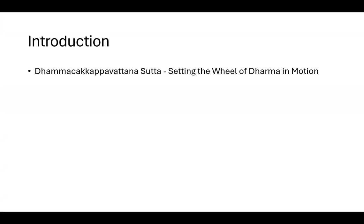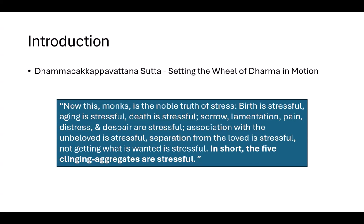Immediately after this, he explains the Four Noble Truths. The Buddha says: 'Now monks, this is the Noble Truth of stress, or dukkha, of dissatisfaction. Birth is stressful. Aging is stressful. Death is stressful. Sorrow, lamentation, pain, distress, and despair are stressful. Association with the unloved is stressful. Separation from the beloved is stressful. Not getting what is wanted is stressful. In short, the five clinging aggregates are stressful.' These clinging aggregates are the clinging skandhas. So if the First Noble Truth is that the five clinging aggregates are dissatisfactory, we should really investigate what these five skandhas are.